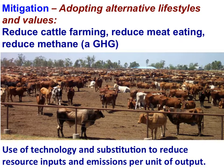A mitigation strategy to reduce the causes of climate change would be to reduce meat eating, to reduce cattle production and the release of methane into the atmosphere. This would be strategy one: the adoption of alternative lifestyles and values through campaigns, education, and economic incentive.